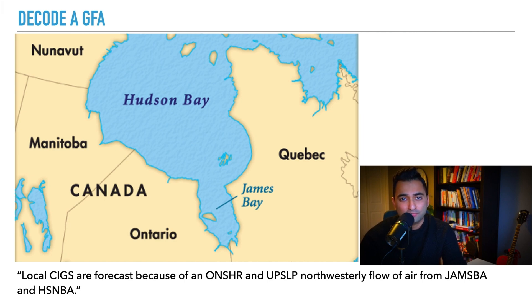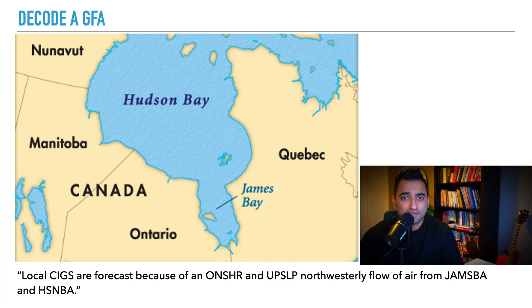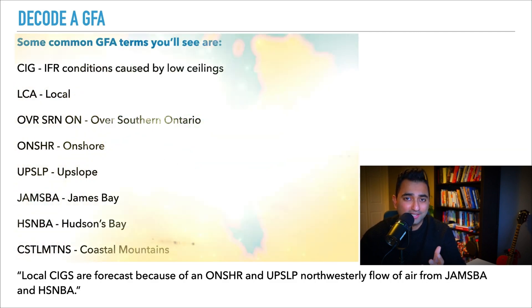Nav Canada uses these terms assuming you know your geography. James Bay and Hudson's Bay are shown on the map here, and you must have a basic understanding of where these are located.